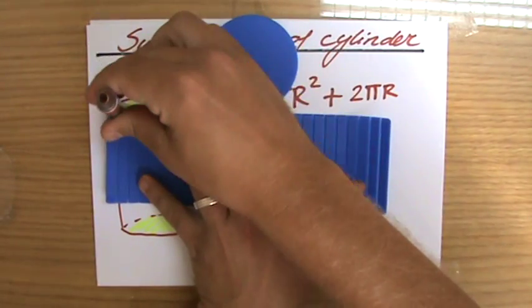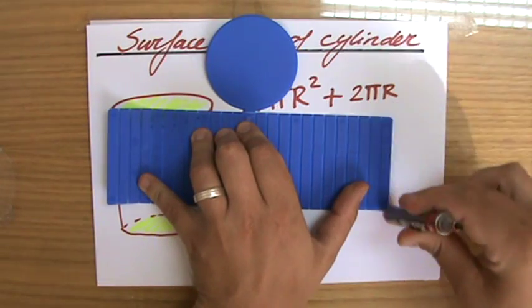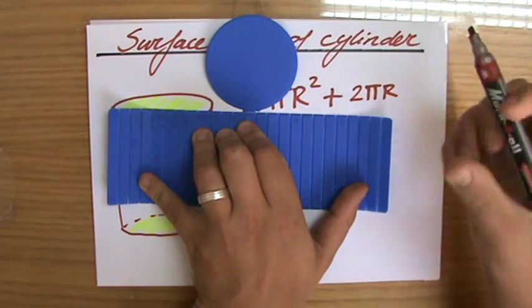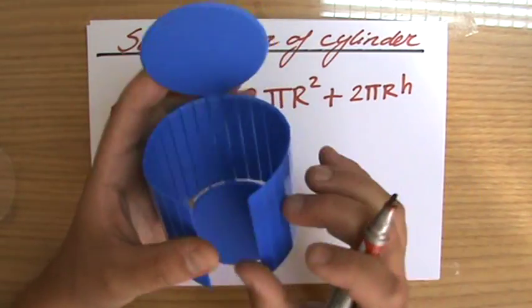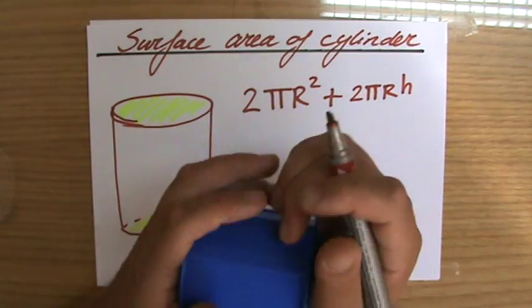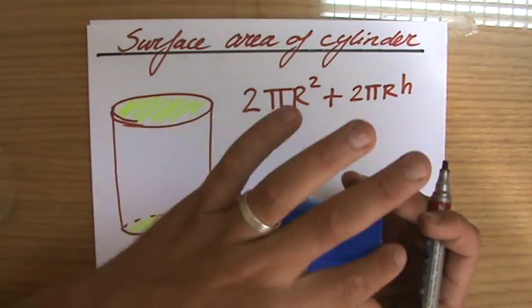and we call this the height. Because that is the perpendicular distance, I should say, between those two bases. So times the height.